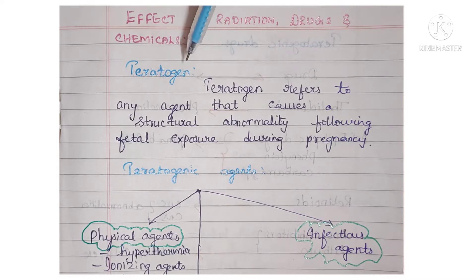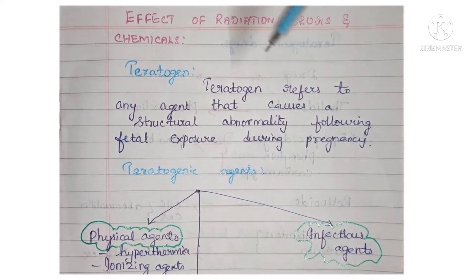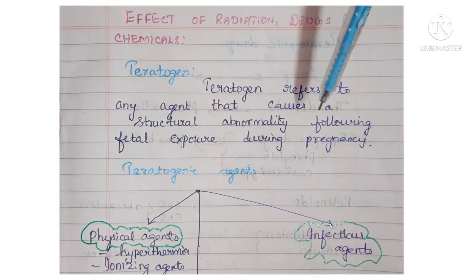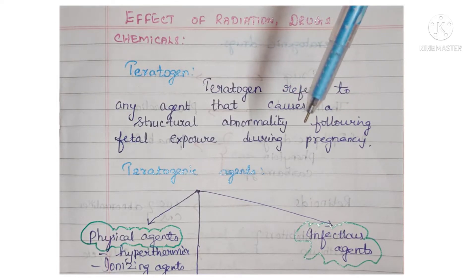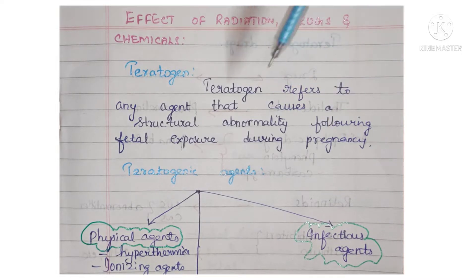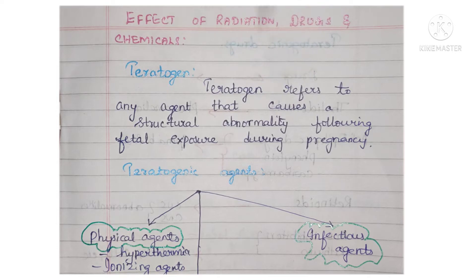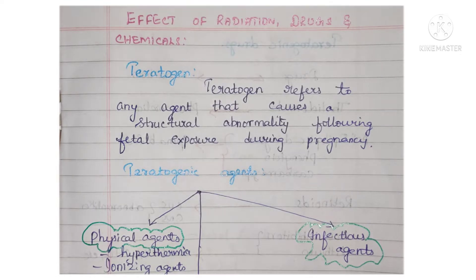First, we will see what is a teratogen. A teratogen is any agent that can cause structural abnormalities in a developing fetus following an exposure during pregnancy. When you are exposed to some teratogenic agents, they can produce structural abnormalities in the developing fetus. That agent is named as a teratogen.